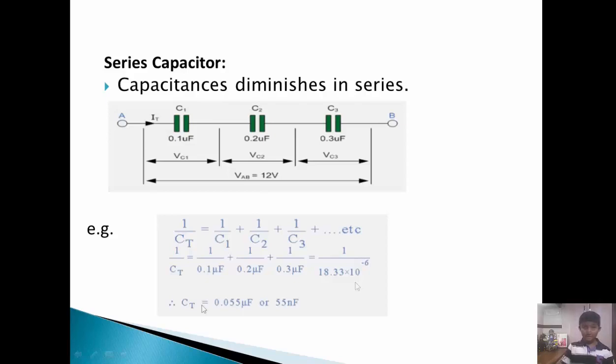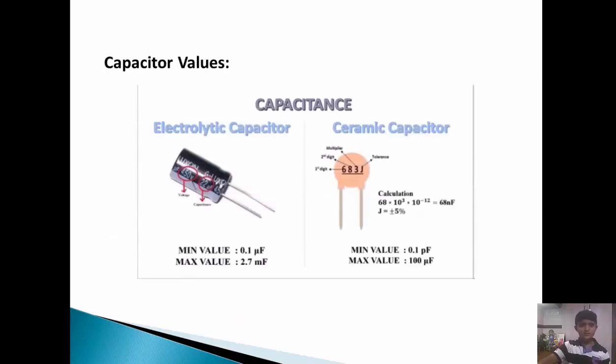Now we'll see the capacitor values. The first one is electrolytic capacitor. The minimum value of electrolytic capacitor is 0.1 microfarad, maximum value is 2.7 millifarad. Next is ceramic capacitor. The minimum value of ceramic capacitor is 0.1 picofarad, maximum value is 100 microfarad.